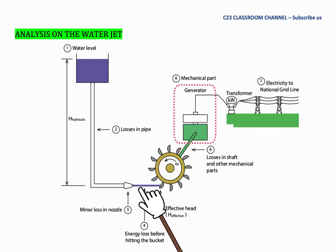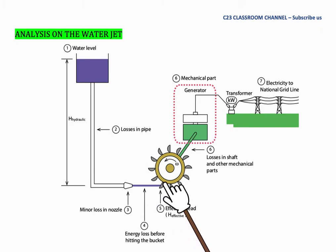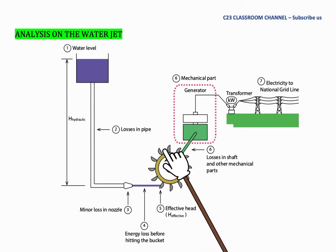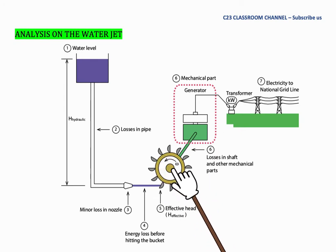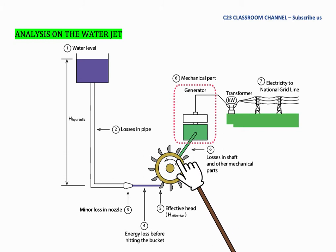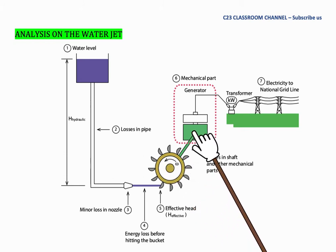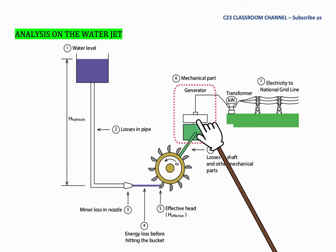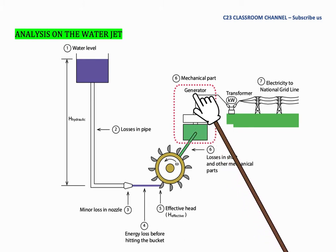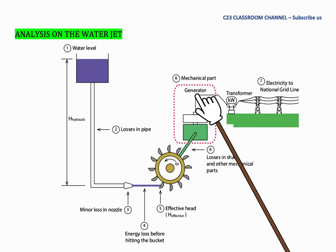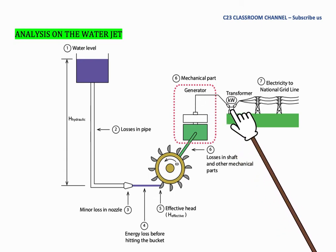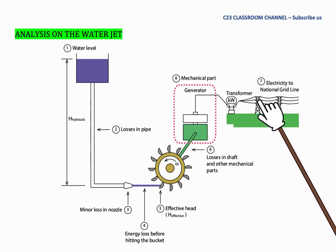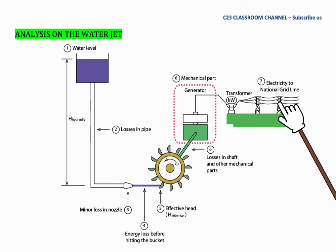The high-velocity water jet hits the bucket of the Pelton wheel, causing the wheel to rotate. At the same time, the shaft connected to the wheel rotates the generator, producing electricity. From there, the electricity goes to the transformer and is distributed to the national grid line.